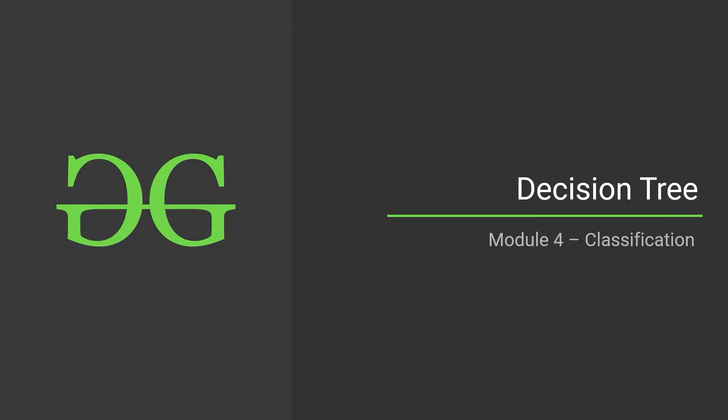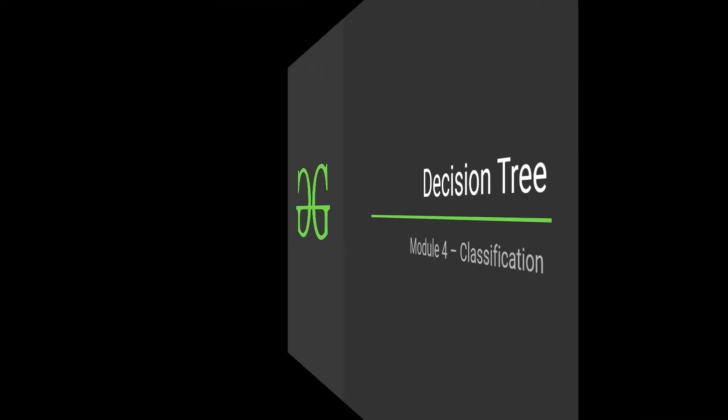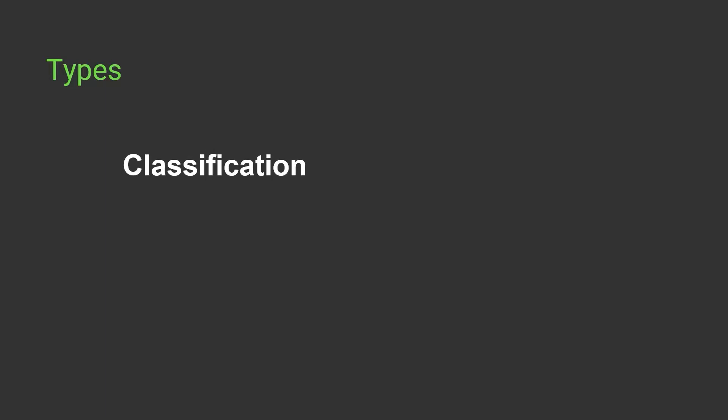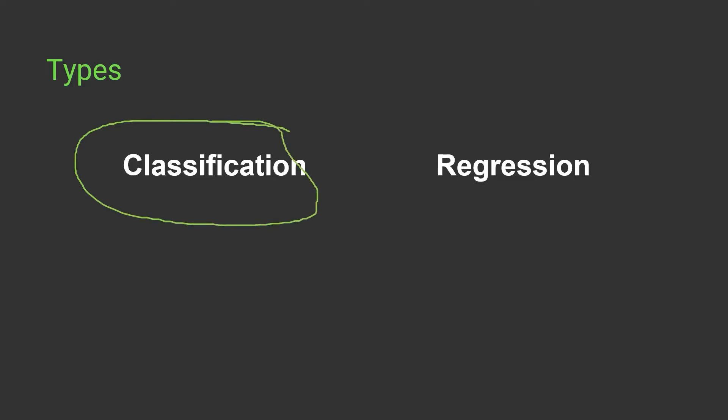Welcome to the next lecture of module number 4, that is the classification module. In this lecture we will be understanding all about decision tree. Decision tree is of two types — classification and regression — as I have already explained in the regression module. This lecture will explain decision tree with respect to the classification problem, covering all the math involved: split, entropy, and gain.